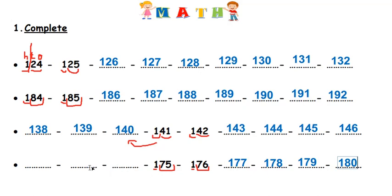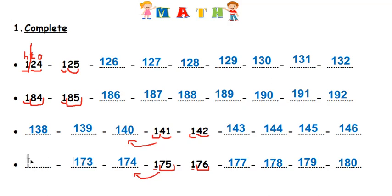Now I will have to move backwards here. I look carefully — I have one hundred seventy-five. Before seventy-five it's seventy-four, so one hundred seventy-four. Before seventy-four it's seventy-three, so I write one hundred seventy-three. Before seventy-three it's seventy-two, so I write one hundred seventy-two.